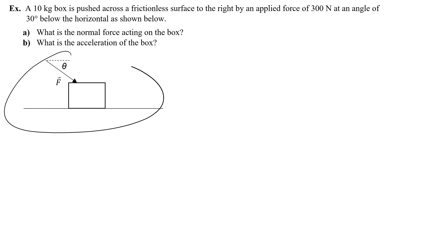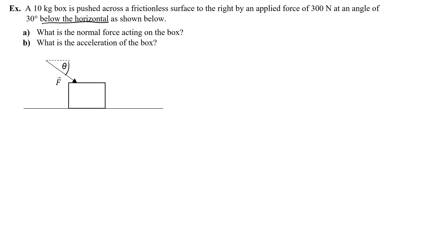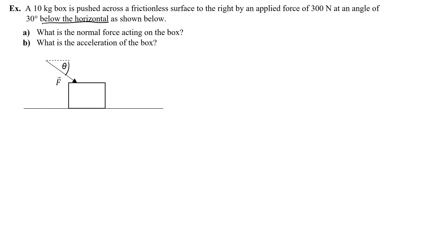Below the horizontal means the angle is below a horizontal line. To process this applied force, I'll draw a dot representing the center of mass of the box, then draw the angled force pointing downward and to the right. That represents my applied force at an angle below the horizontal.